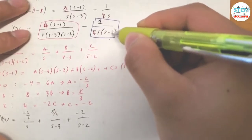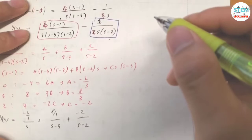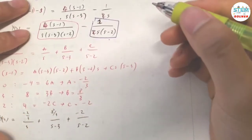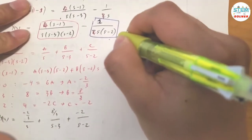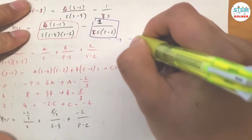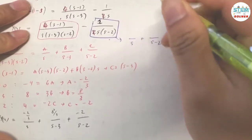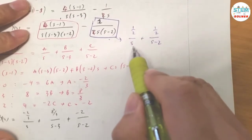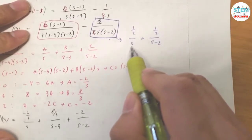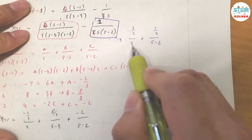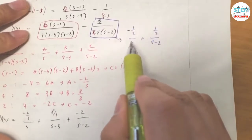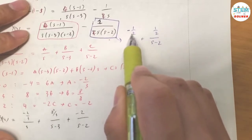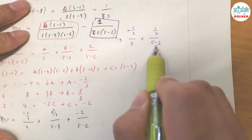For the second fraction, I can use a shortcut. If you haven't seen my video on finding partial fractions in under 30 seconds, I'll put a link in the upper right corner. Using that method, I write something over S plus something over (S minus 2). They are off by two, so I have one-half on top. The bigger denominator carries the negative sign, so this one is negative one-half over (S minus 2). Checking by cross-multiplying: negative one-half plus one-half equals zero, and negative one-half times negative two equals positive one.